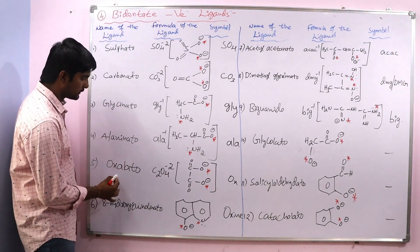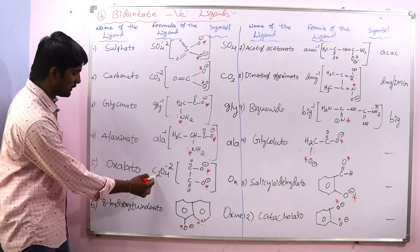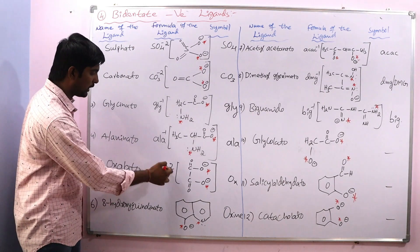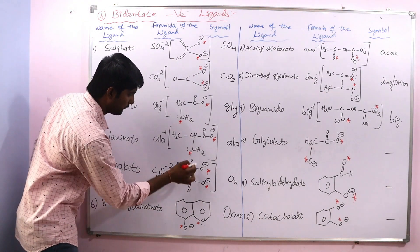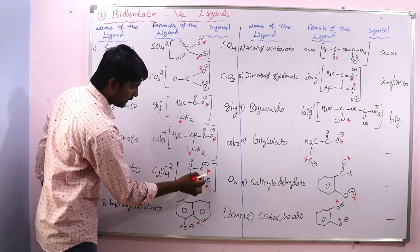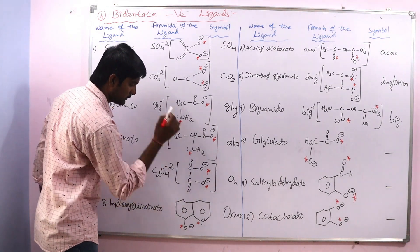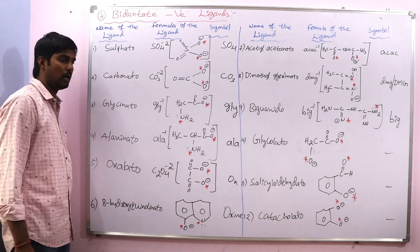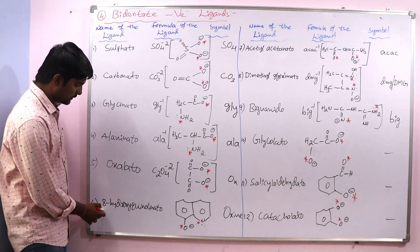Next is oxalate. It is generated from oxalic acid. This is the structure of oxalate, and here also two oxygen atoms are the donor atoms.